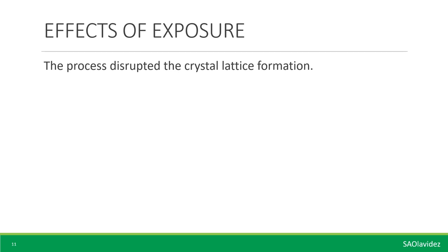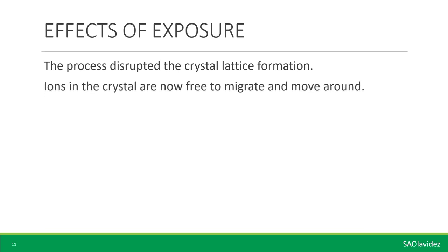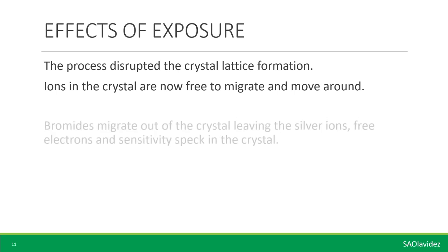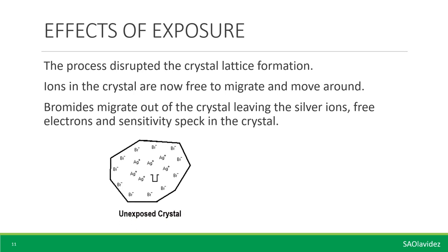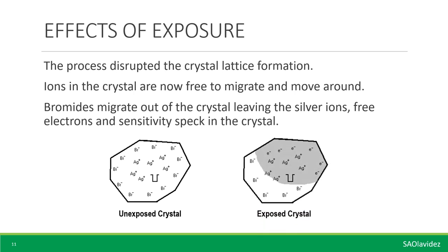So a recombination of bromine and the free electron is no longer possible. The process disrupts the crystal lattice formation, and ions are no longer held in place by their ionic bond. Ions in the crystal are now free to migrate and move around. The bromides migrate out of the crystal, leaving the silver ions, free electrons, and sensitivity specks in the crystal. This is how an unexposed crystal looks — the crystal lattice formation is intact and the surface takes on a negative charge. In contrast, crystals that have already been exposed to radiation show areas where the crystal lattice formation is disrupted, leaving just the silver ions, free electrons, and sensitivity specks.